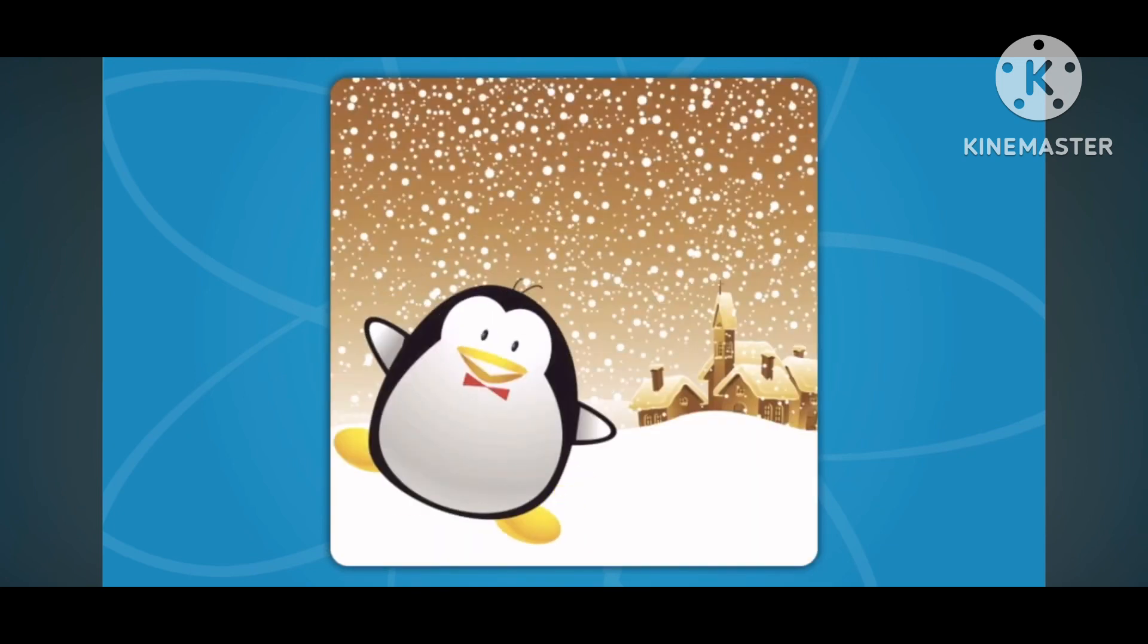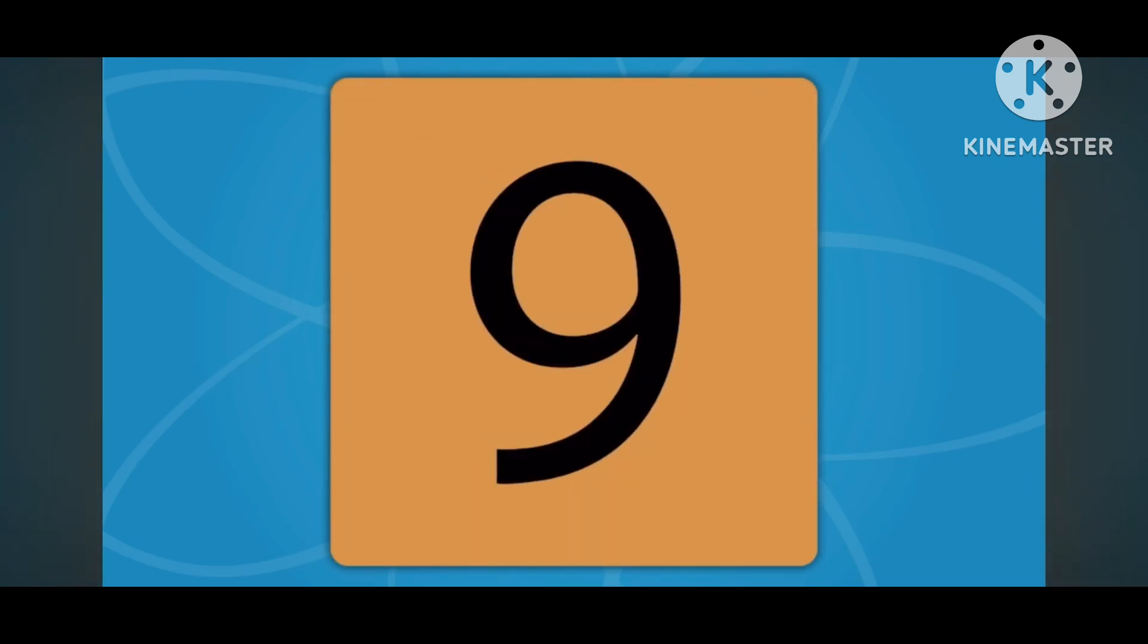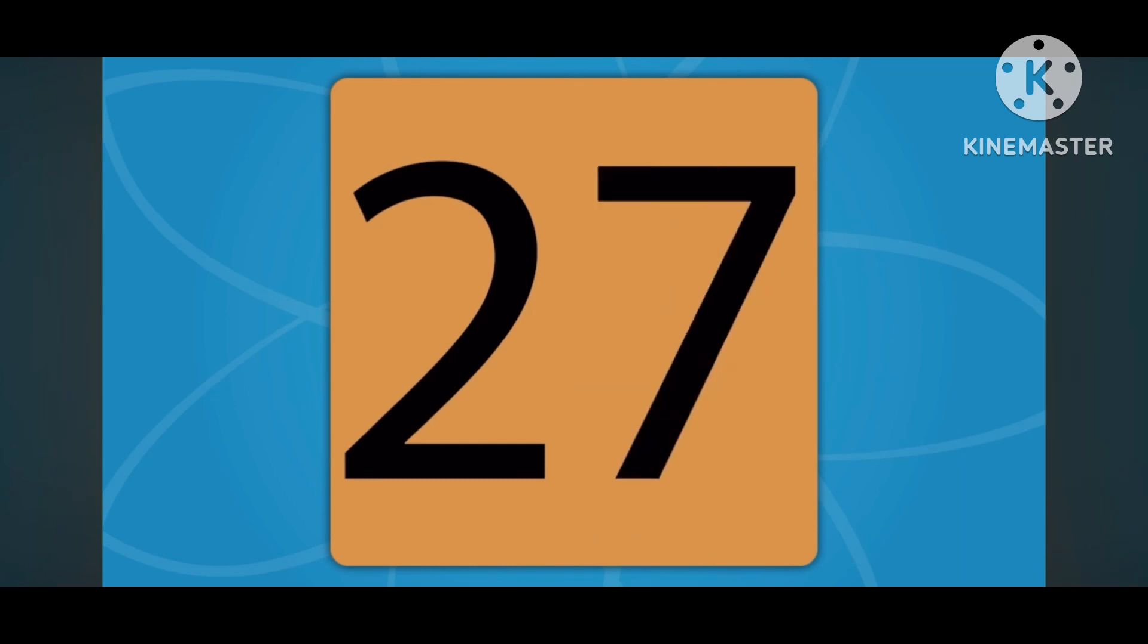3 by 3, now count with me. I said 3, 6, 9. Sing it faster this time. We'll skip two numbers in between. Let's count up to 30. We'll start with 3: 3, 6, 9, 12, 15, 18, 21, 24, 27, 30.